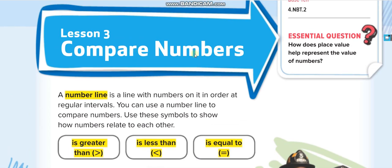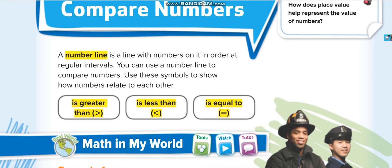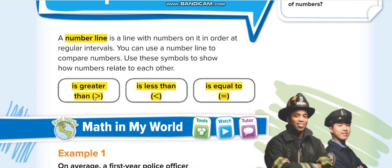We will compare numbers using these three symbols. Greater than — the symbol opens towards the right. Less than — the symbol opens towards the left. You can memorize it like: L for left and L for less, so the symbol points towards the left. And of course, the equal sign, which all of you guys know.